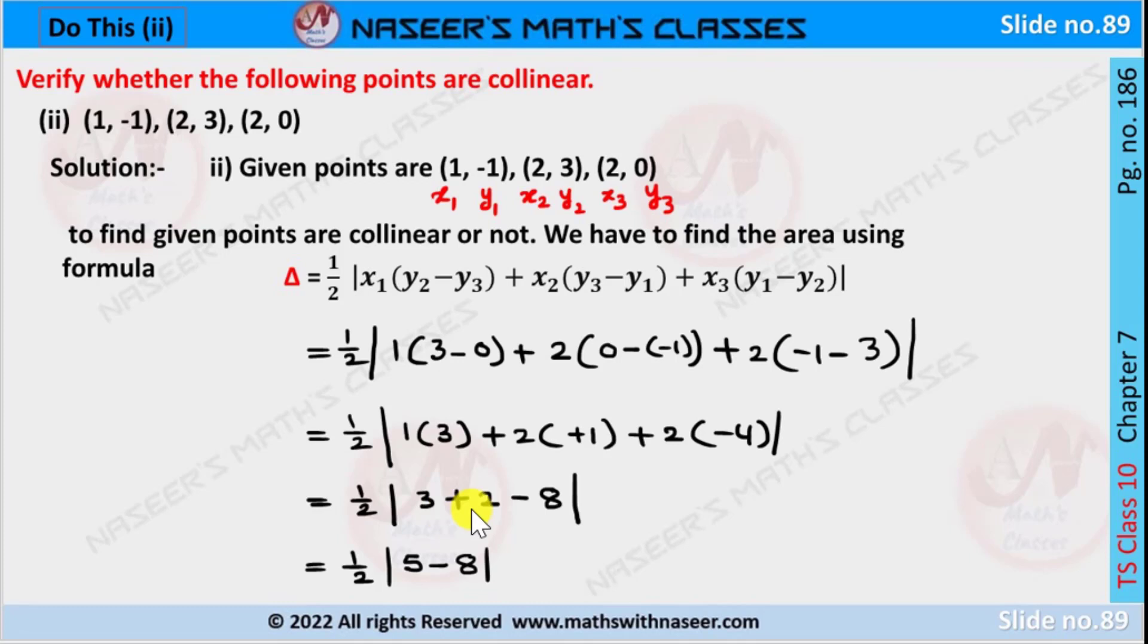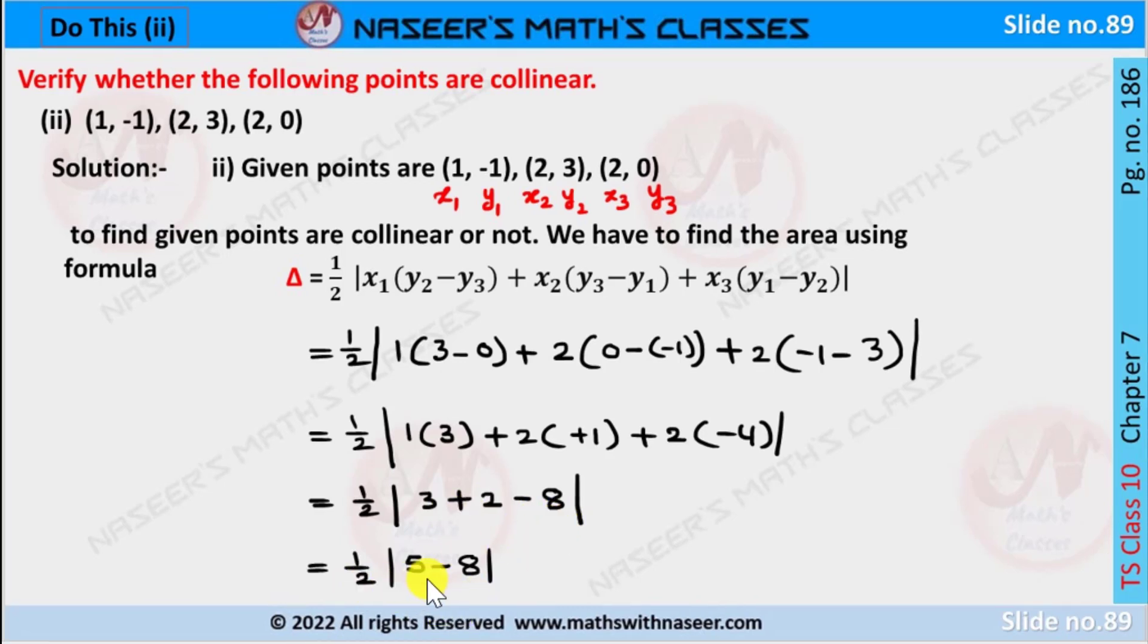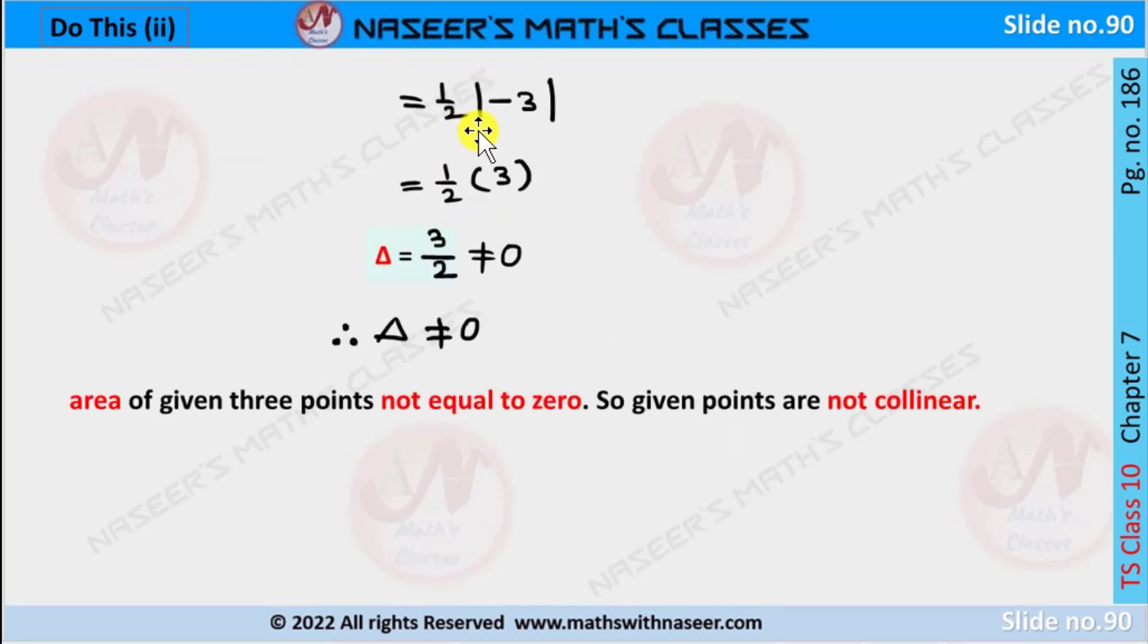Here 3 plus 2 is written as 5 and -8. By simplifying, 5 minus 8 we get -3, so ½|-3|.